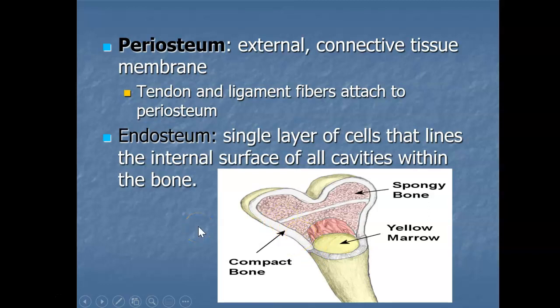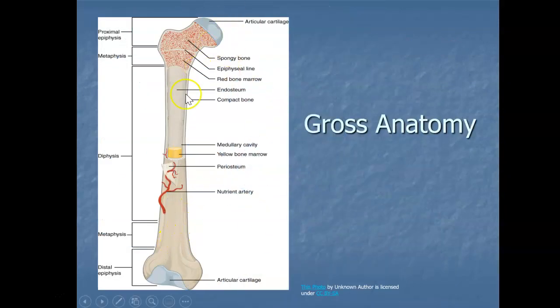The outer surface of the bone is covered with a fibrous membrane called the periosteum — that's what you actually see when you look at a bone. The endosteum lines the inside and the periosteum lines the surface. The periosteum contains blood vessels, nerves, and lymphatic vessels, and its job is to nourish the bone, giving it the nutrients it needs to grow.